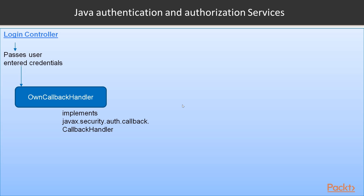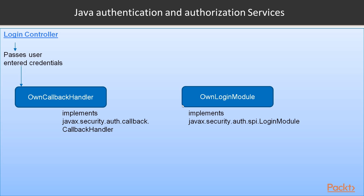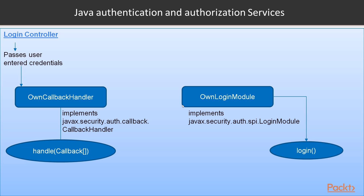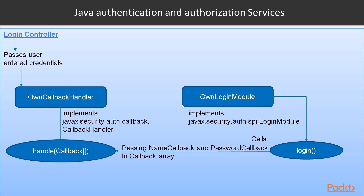You also have another class, OwnLoginModule, which implements the javax.security.auth.spi.LoginModule interface. OwnCallbackHandler has a handle method that takes an array of Callback objects — this is required when you implement the CallbackHandler interface. OwnLoginModule has a login method where the login process starts. This login method calls the handle method of your callback handler and passes an array of Callback objects.